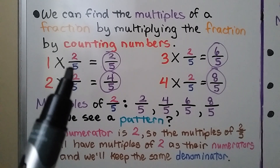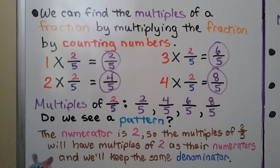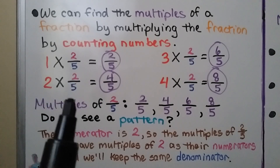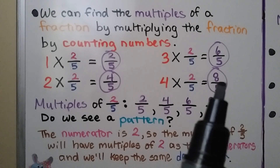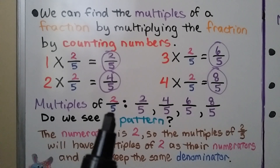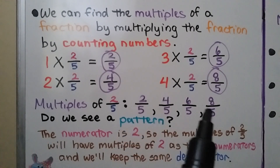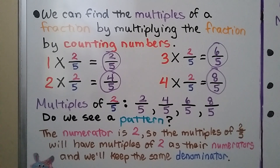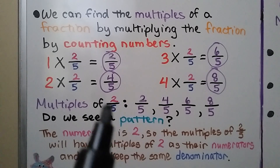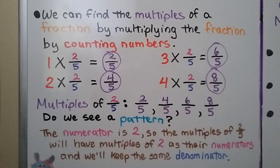We can find the multiples of a fraction by multiplying the fraction by counting numbers. To find the multiples of 2/5, we multiply 2/5 by 1, 2, 3, 4, and so on. One times 2/5 is 2/5; 2 times 2/5 is 4/5; 3 times 2/5 is 6/5; 4 times 2/5 is 8/5. The multiples of 2/5 are 2/5, 4/5, 6/5, 8/5. The pattern: the numerator 2 is multiplied by counting numbers — 2, 4, 6, 8 — and the denominator stays the same.